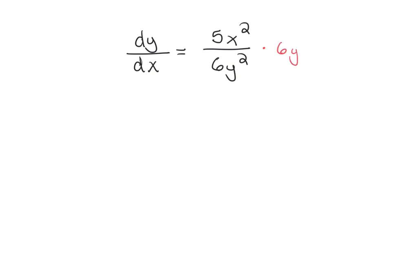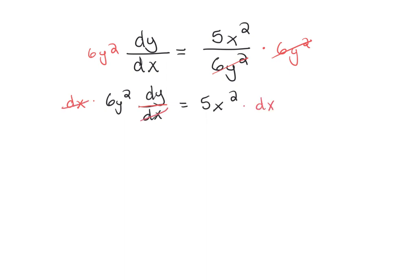I'm going to start by multiplying both sides by 6y squared. We usually work on getting our y's to the left and our x's to the right. So 6y squared dy over dx equals 5x squared. Now we're going to get the dx to the other side — treat it like a fraction and multiply both sides by dx. So now I have 6y squared dy equals 5x squared dx.